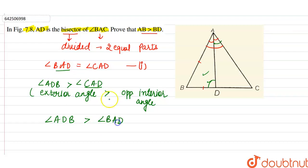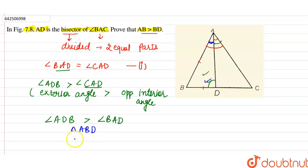Since angle CAD is equal to angle BAD, we can say that angle ADB is greater than angle BAD. Now in triangle ABD, the side opposite to the greater angle is longer. Therefore, the side opposite to angle ADB is AB.